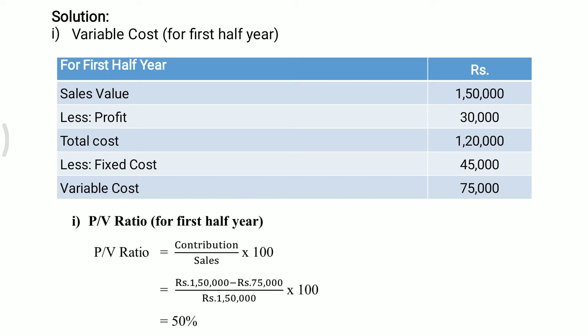Next, calculation of PV ratio for the first half year. PV ratio equals contribution divided by sales, multiplied by 100. Contribution is sales minus variable cost, that is 1 lakh 50,000 minus 75,000, divided by 1 lakh 50,000, multiplied by 100. We get PV ratio is 50 percent.